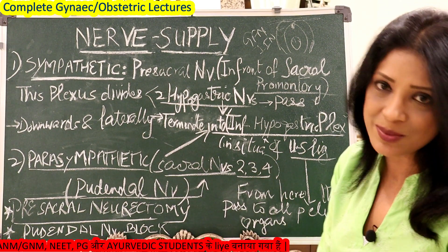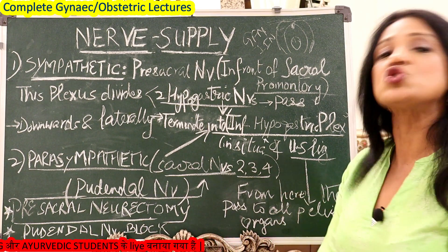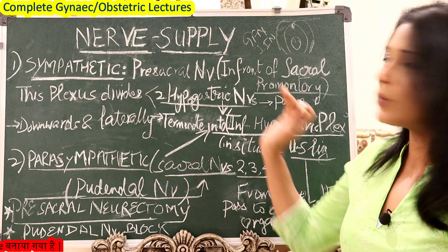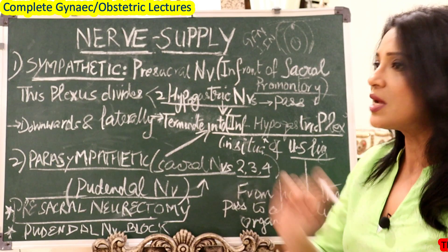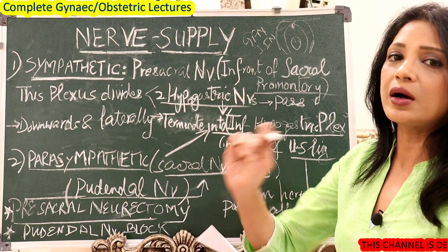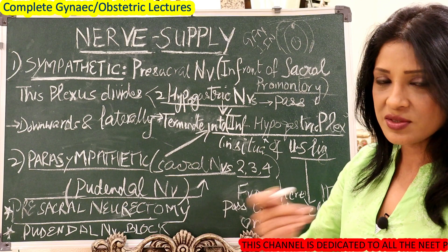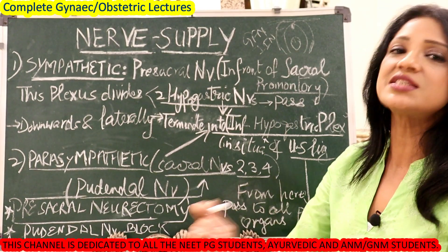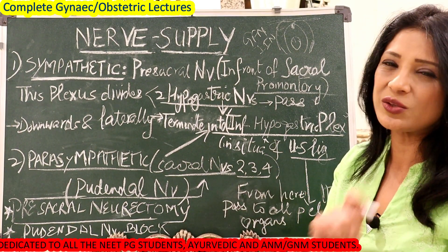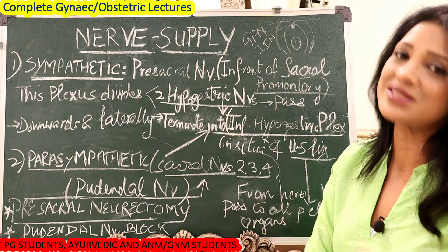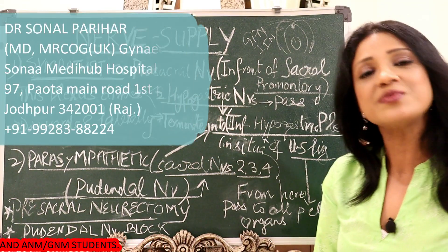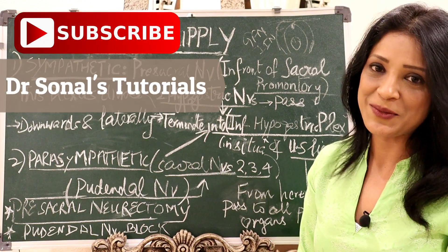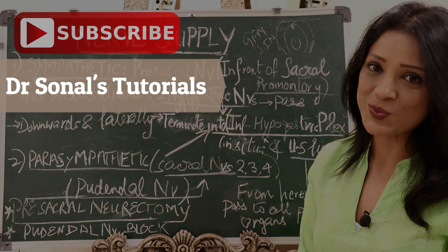That covers the nerve supply. If you have any questions or confusion, you can always inbox me. I try to make these notes simple, drawing from Marrow, Shaw's, and simplified MBBS textbooks. You should know the names of where the supply comes from. All the best for your exams.